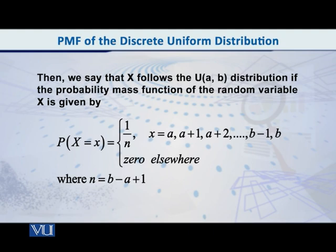P of x is equal to 1 by n, x is equal to a, a plus 1, a plus 2, so on and so on, b minus 1, b.